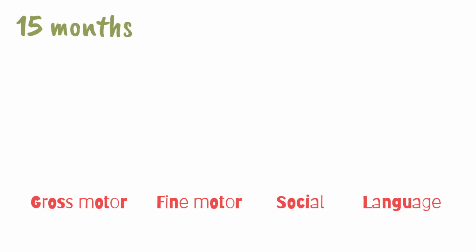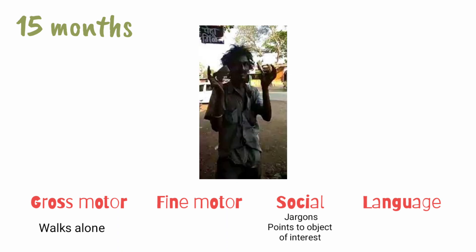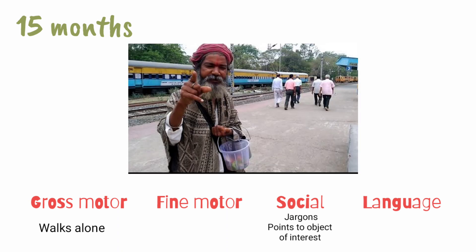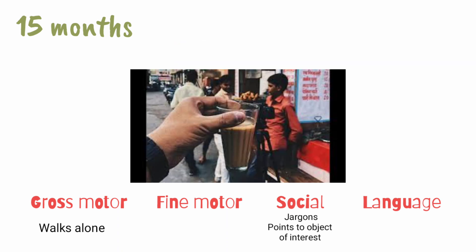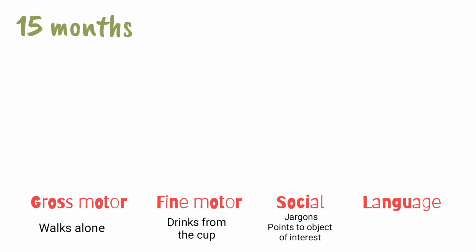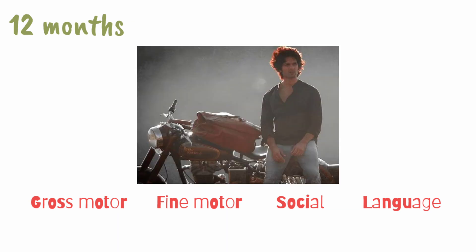For 15 months, remember a story of a man who wants to drink tea but has no money. He walks alone to the tea stall and jargons something so that the seller interprets him as a mad person. Then he points toward the tea and asks for a cup. The seller gives him a cup of tea and he drinks from the cup. Key points: under gross motor — walks alone; under fine motor — drinks from cup; under social — jargons and points to object of interest.